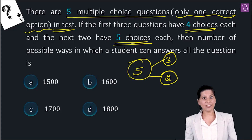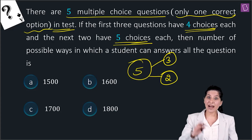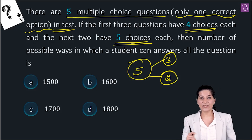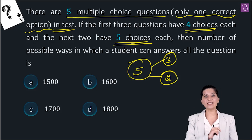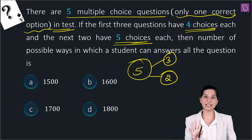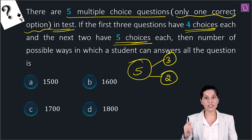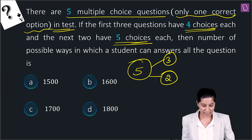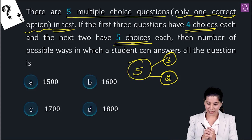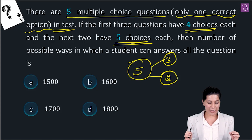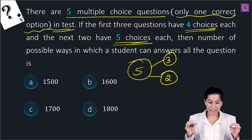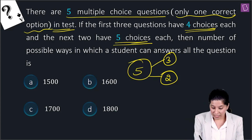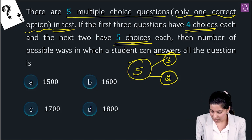And for the next two questions, there are five choices: A, B, C, D, E. But in all questions, the answer is exactly one. We need to find how many ways a student can answer all the questions.